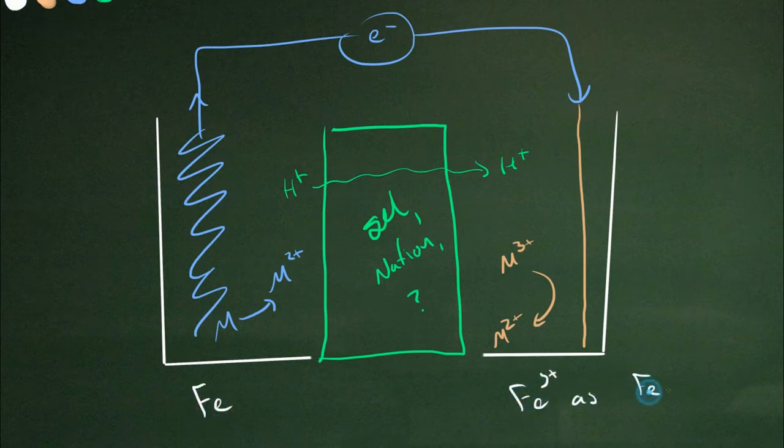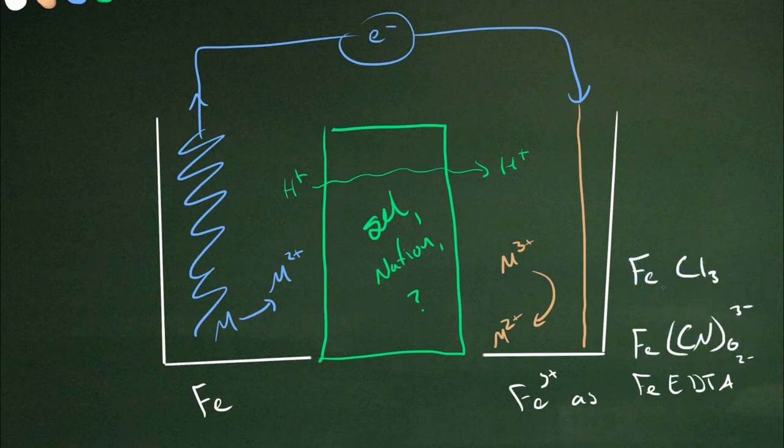In our case, we're going to use iron metal at the anode and an iron salt at the cathode. We've tried iron EDTA, iron cyanide, iron chloride. We can try some other things.